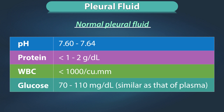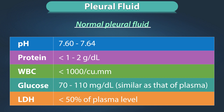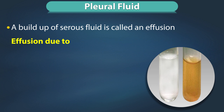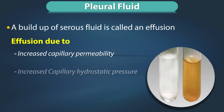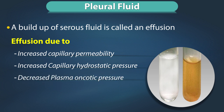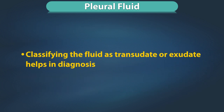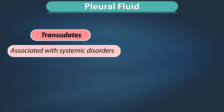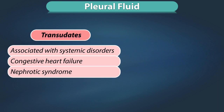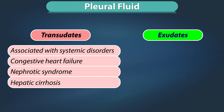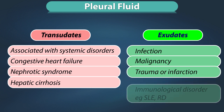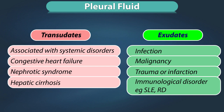Normal pleural fluid has glucose content similar to plasma and lactate dehydrogenase less than 50% of plasma levels. A buildup of serous fluid is called an effusion, which can be due to increased capillary permeability, increased capillary hydrostatic pressure, decreased plasma oncotic pressure, or decreased lymphatic reabsorption. Transudates are seen with systemic disorders like congestive heart failure, nephrotic syndrome and hepatic cirrhosis, whereas exudates are associated with localized infection, malignancy, trauma, infarction, or immunological disorders such as SLE or rheumatoid disease.